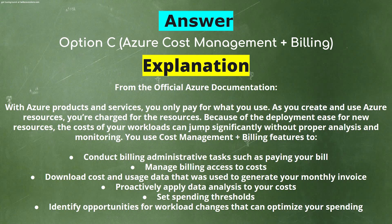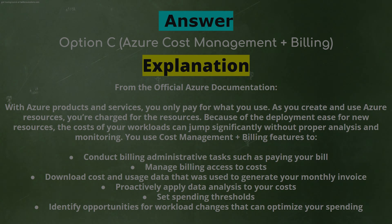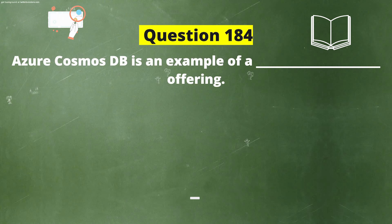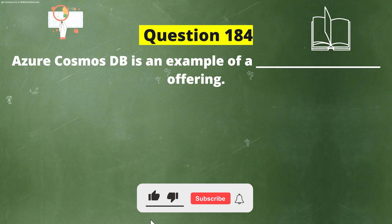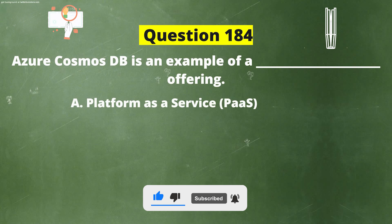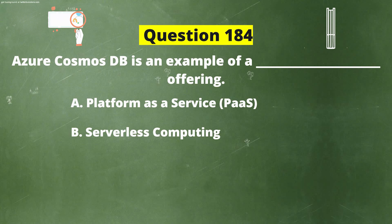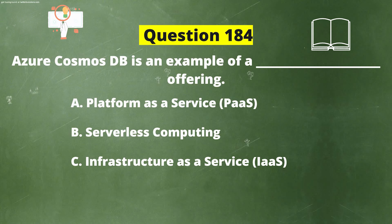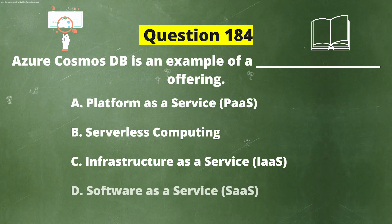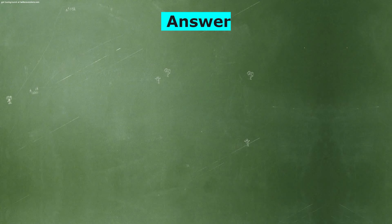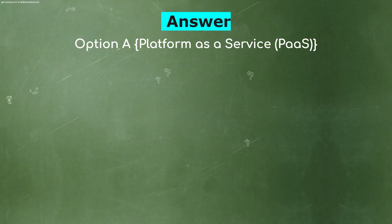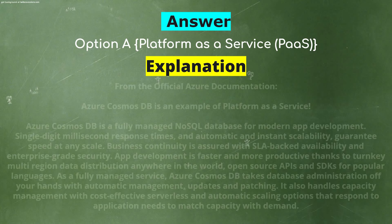Next question: Azure Cosmos DB is an example of a dash offering. The options are: A) Platform as a Service (PaaS), B) Serverless Computing, C) Infrastructure as a Service (IaaS), D) Software as a Service (SaaS). The correct answer is option A: Platform as a Service.